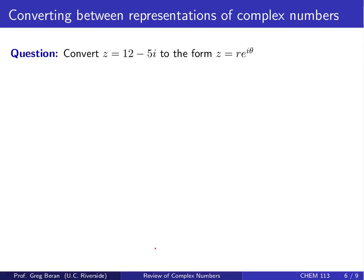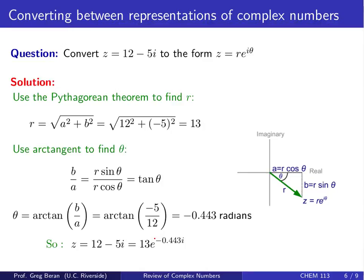For another example, convert z equals 12 minus 5i to the form z equals r times e to the i theta. Pause the video and try working this out. The solution involves the Pythagorean theorem: r equals the square root of a squared plus b squared, or the square root of 12 squared plus negative 5 squared, which is 13. Using the arctangent of b over a, or the arctangent of negative 5 over 12, gives theta equals negative 0.443 radians. So z equals 13 times e to the minus 0.443 times i.